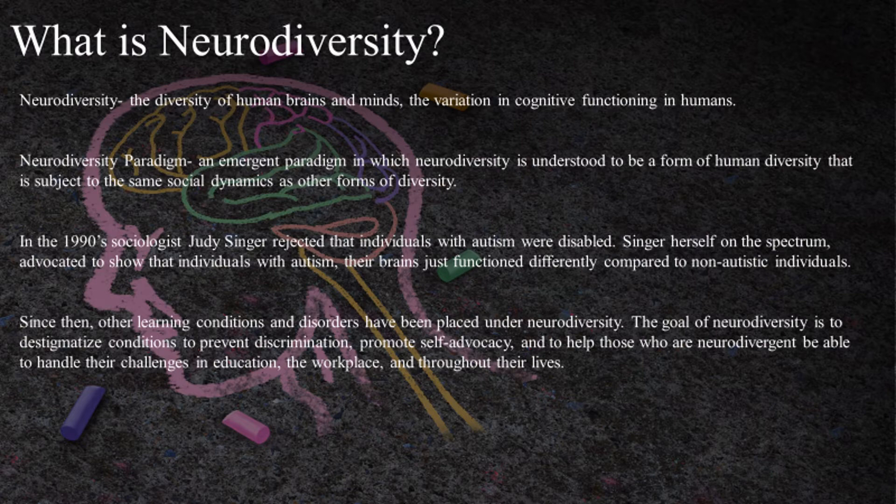In the 1990s, sociologist Judy Singer rejected that individuals with autism were disabled. Singer, herself on the spectrum, advocated to show that individuals with autism simply have brains that function differently compared to non-autistic individuals. Since then, other learning conditions and disorders have been placed under neurodiversity.